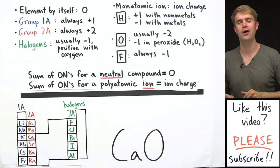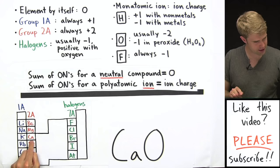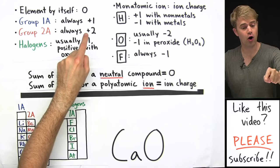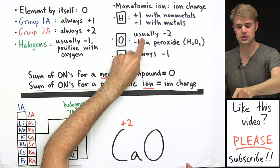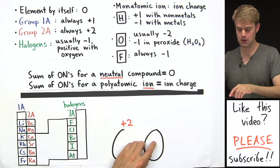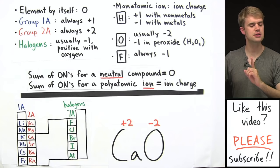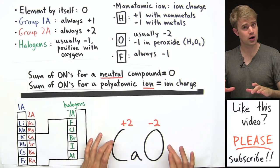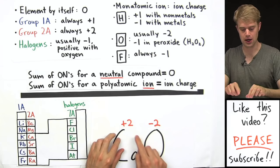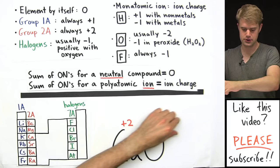Our first example is CaO. Calcium is in group 2A and elements in group 2A are always plus 2, so that's calcium's oxidation number. Oxygen usually has an oxidation number of minus 2 — it's minus 1 in peroxide, but this is definitely not a peroxide. The rule is that the sum of oxidation numbers for a neutral compound should equal 0. CaO is a neutral compound, and plus 2 minus 2 equals 0, so the oxidation numbers sum to 0.